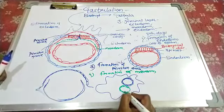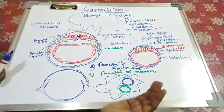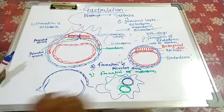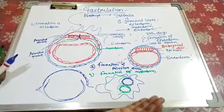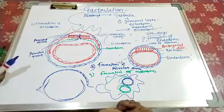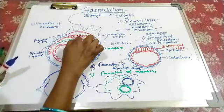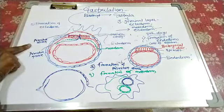The extraembryonic membranes — chorion and amnion — are formed. The chorion, along with the endometrial wall of the mother's uterus, forms the placenta, which provides food material, hormones, water, and oxygen to the embryo.